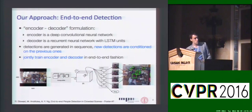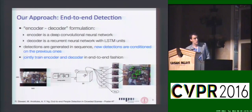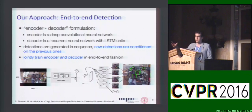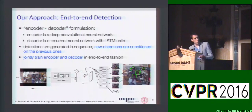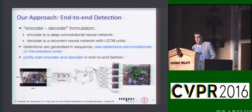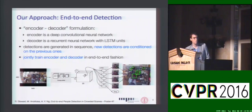What we're suggesting is a system that uses the same encoding to create a high-level representation of the image. But when predicting detections, we use a sequential process — predicting the first box, the second box, and so on until we're done. Because we have this recurrent process, we can avoid creating two boxes on top of the same object and can train the whole thing jointly end to end. The post-processing doesn't only get applied at test time — the same process happens during training.